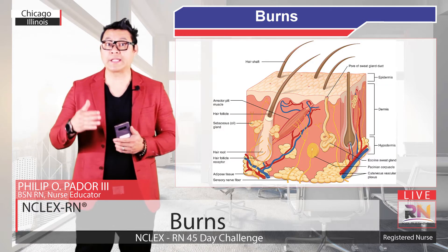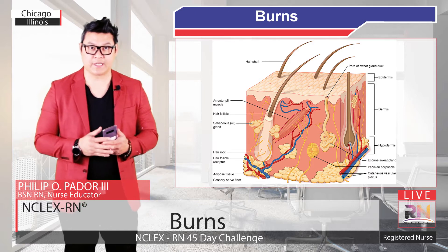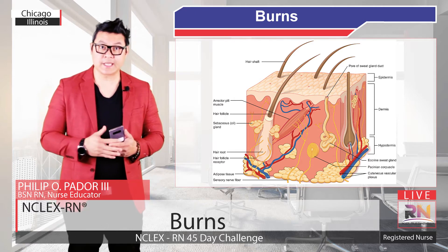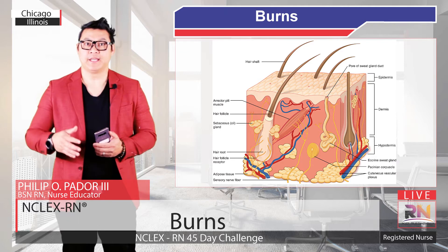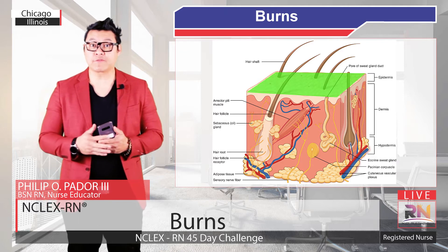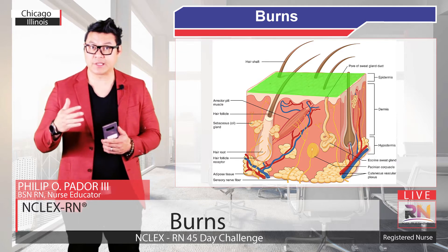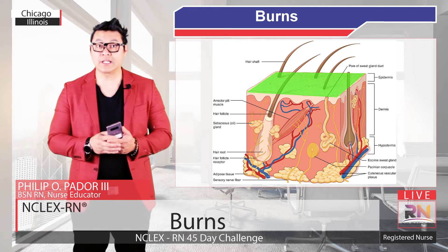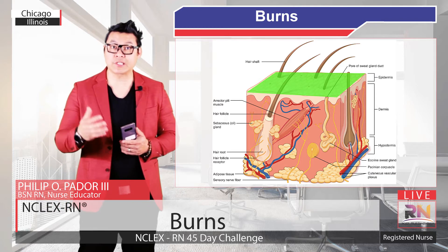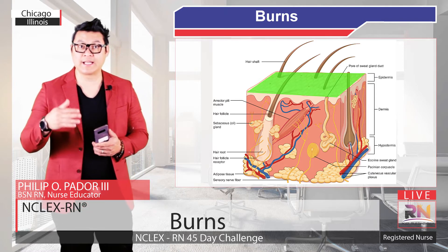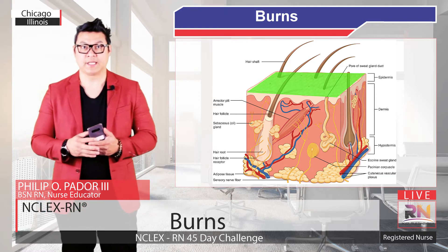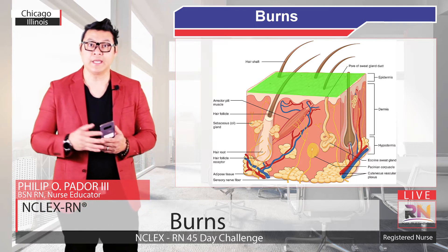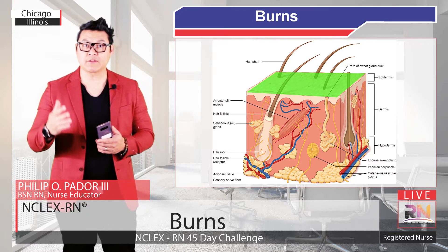The skin is divided into three layers: the epidermis, the dermis, and the hypodermis. The epidermis forms the thin outermost layer of the skin and is made up of several layers of keratinocytes that make and secrete glycolipids, which help to prevent water from easily seeping in and out of the body.